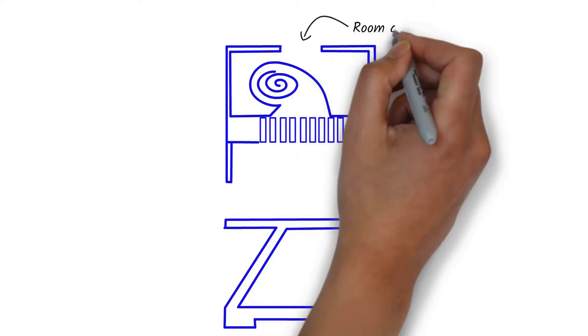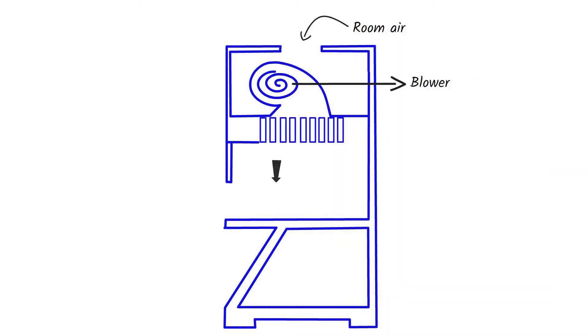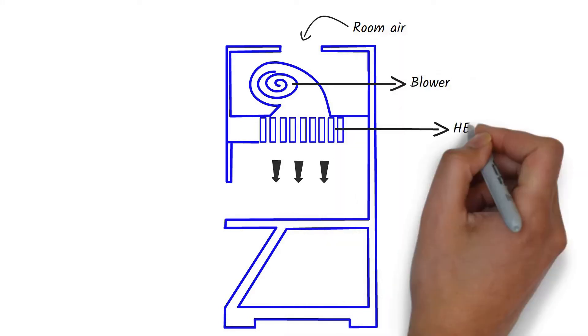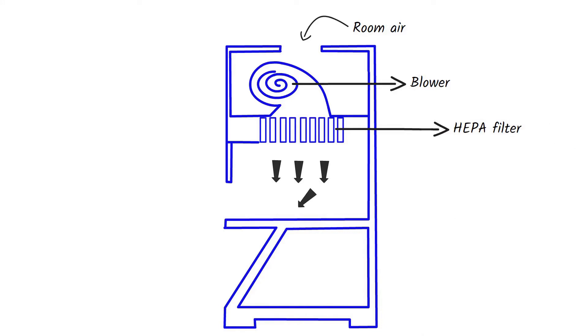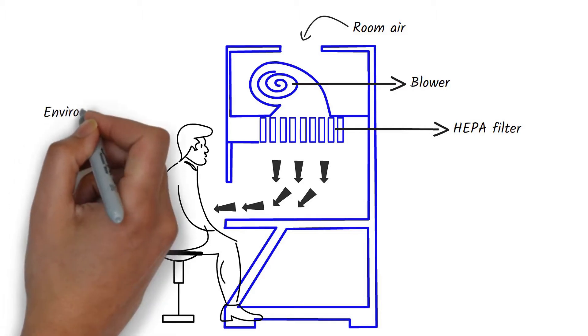The air from the surrounding environment is pulled by the blower and released into the working area through the HEPA filters. From the workbench, most of the air is moved towards the face of the operator and then back to the environment.